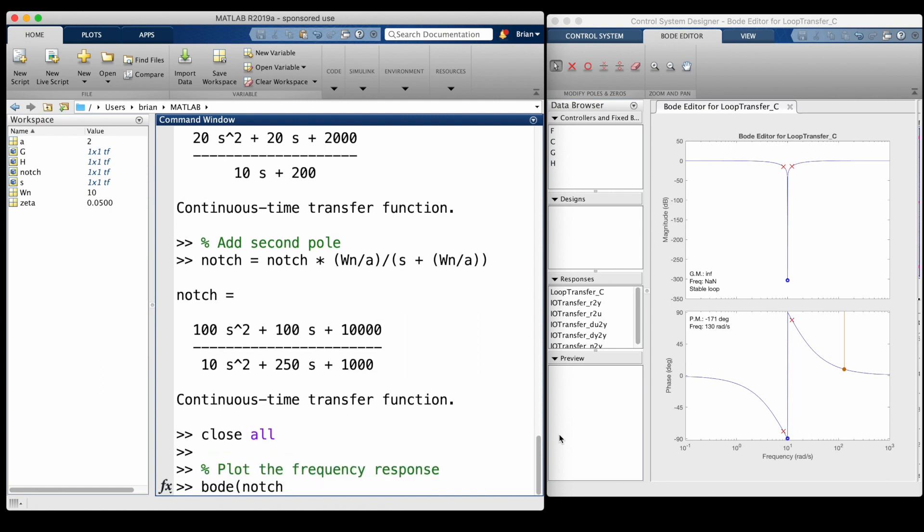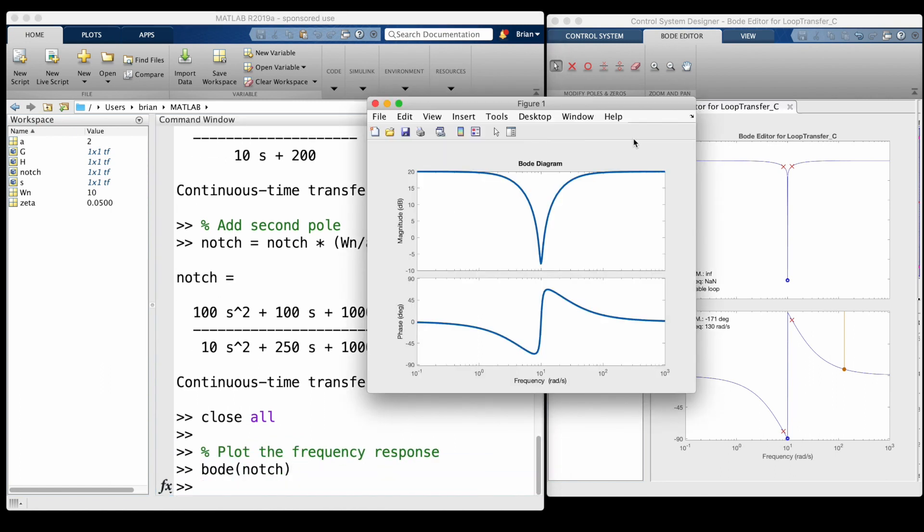And if we plot the frequency response for this filter, you can see the characteristic V shape centered right at the natural frequency.